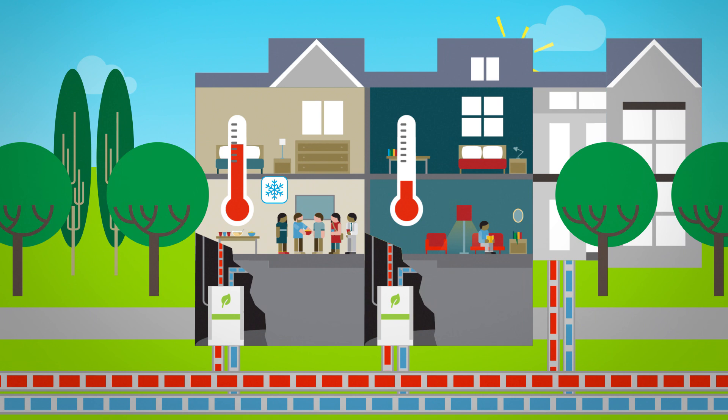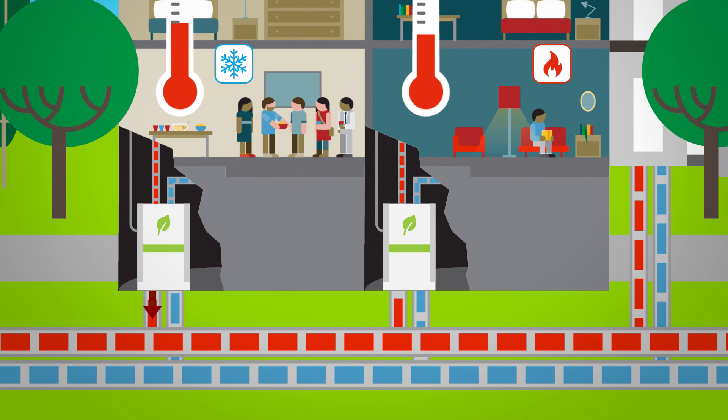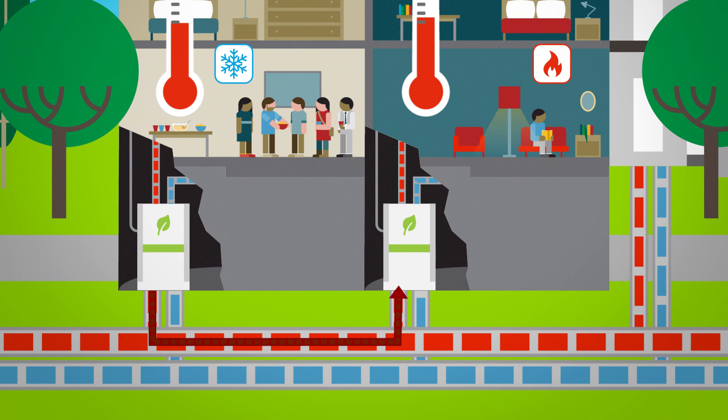Meanwhile, people in the townhome next door are cold, so they turn the temperature up. A heat pump takes the excess heat energy from the first townhome and puts it back into the system, where it can then be used by the townhome needing heat.